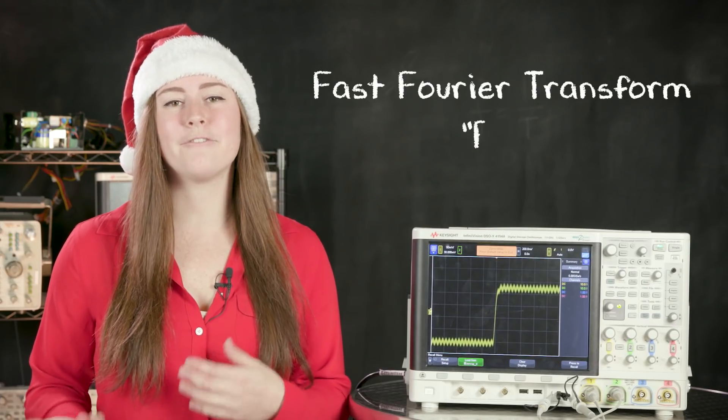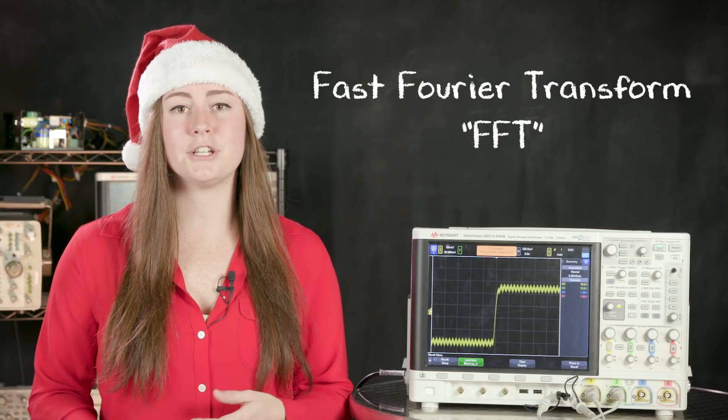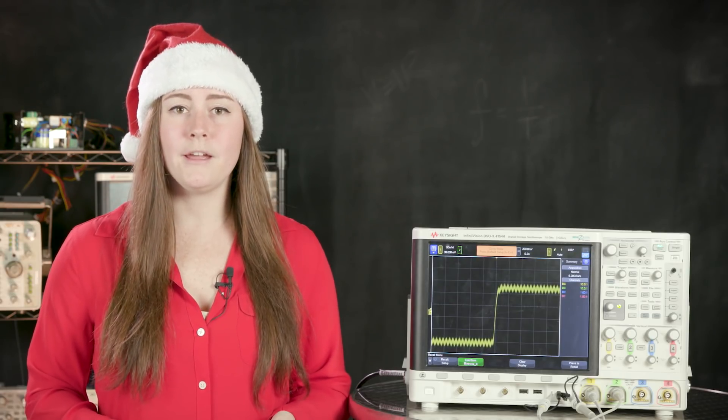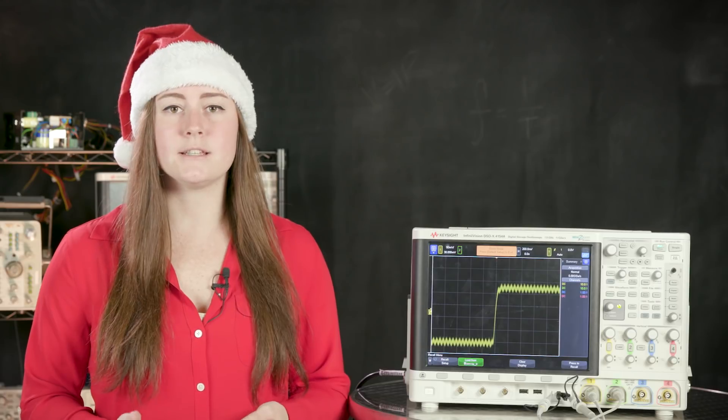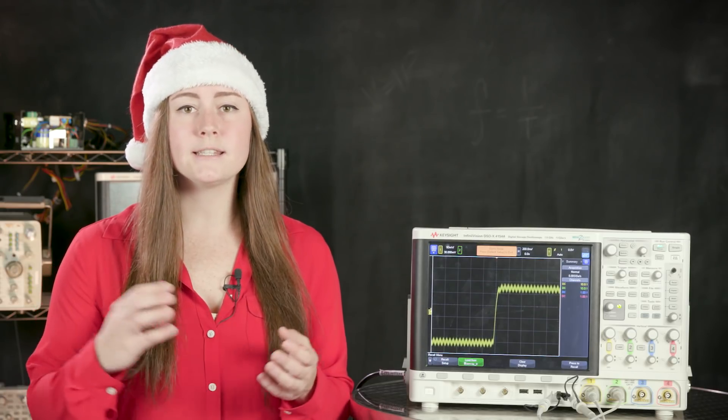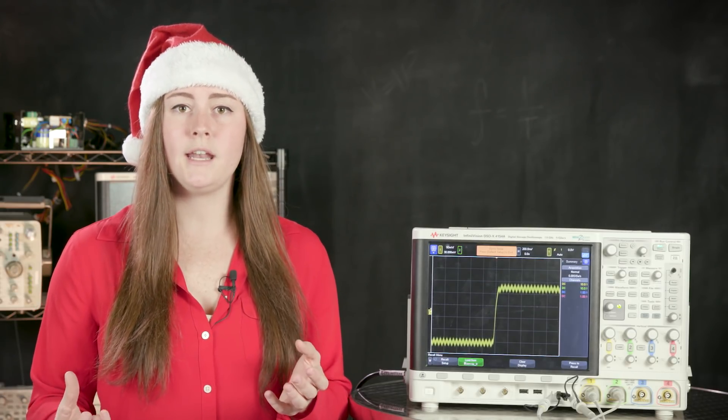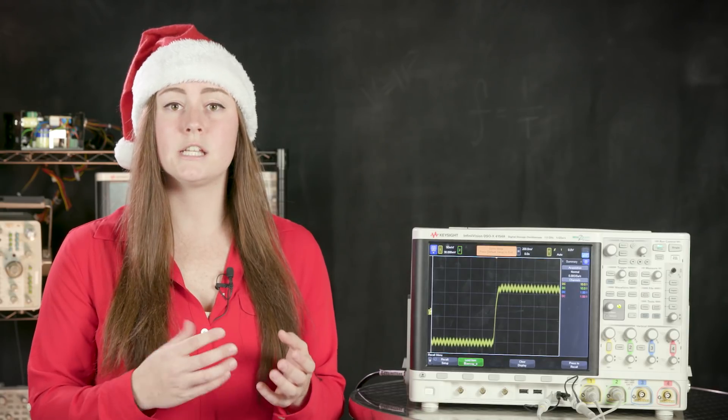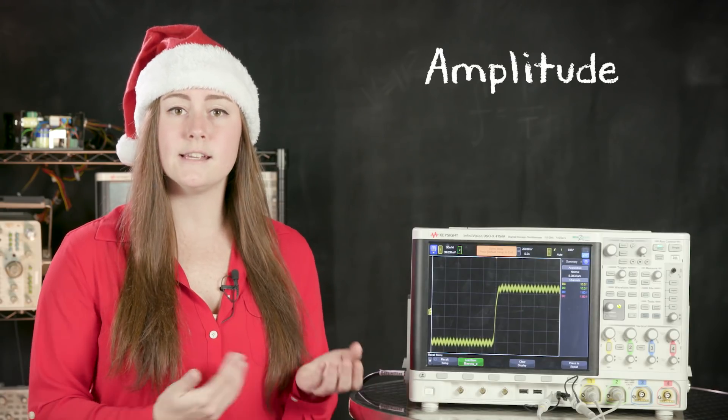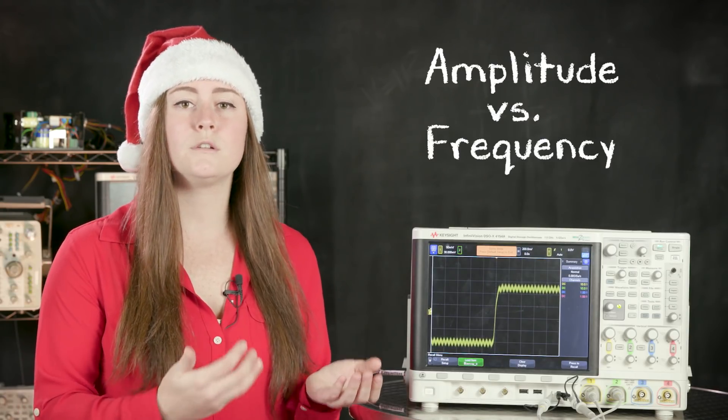You may remember learning about fast Fourier transforms or FFTs in your engineering classes. Very simply put, an FFT is basically just a math operation that splits up the signal you're seeing in the time domain, translates that information into the frequency domain, and displays it on the oscilloscope in a graph showing amplitude versus frequency.